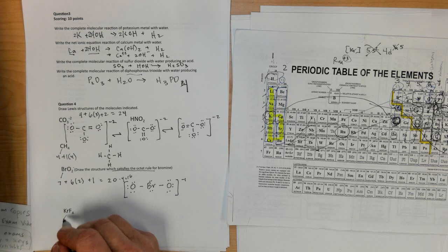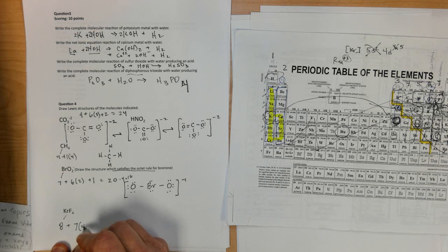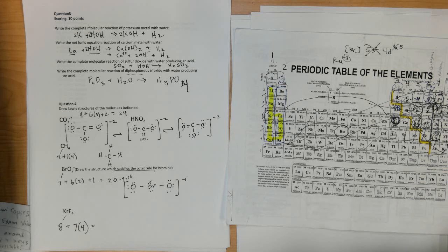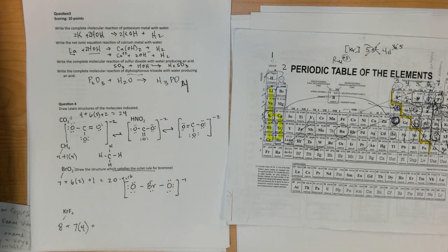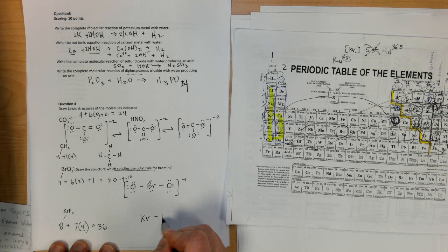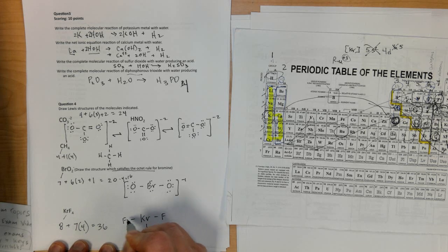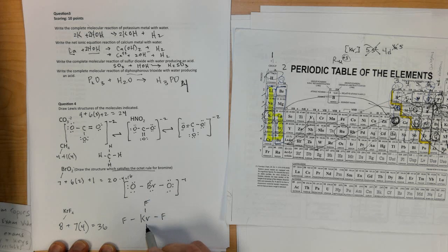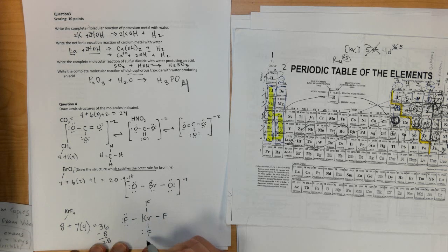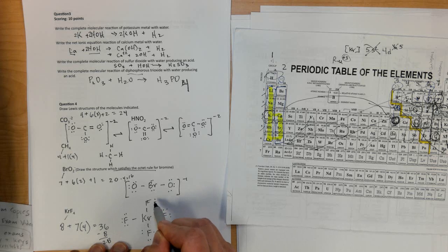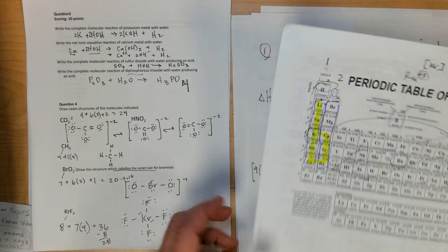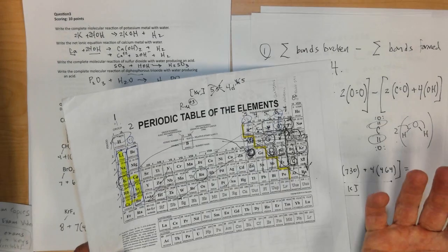Lewis dot structure. Krypton, 8. Fluorine, 7. Times 4. For a total of, let's see, 28 plus 8, 36 valence electrons, I believe. Put krypton in the middle because obviously that's much more, less electronegative than fluorine is. Bond the fluorines around it. 2, 4, 6, 8. 36 minus 8 means we have 28 electrons remaining. 2, 4, 6, 8, 10, 12, 14, 16, 18, 20, 22, 24, 26, 28. Put the extra electrons on krypton. Krypton happens to be third period or below. And so it can have an expanded octet.